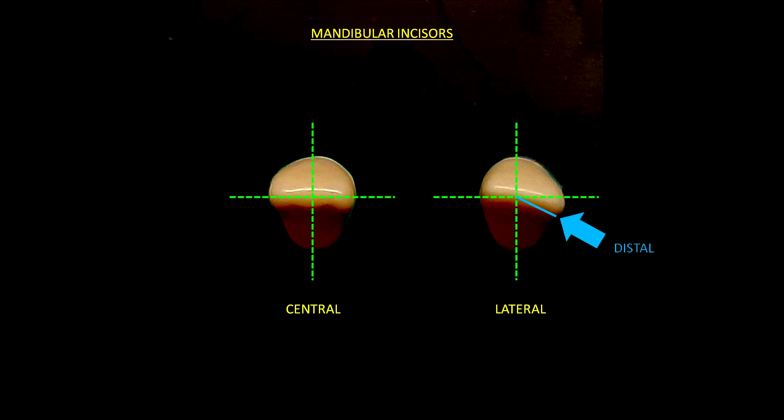In summary, if we want to identify the lateral from the central mandibular incisor, we have to look at the incisal border. If the incisal border is twisted and deviates towards the distal region, then it is a lateral incisor. If we have bilateral symmetry, then it means we have a central mandibular incisor. This is a good tip because the incisal border also helps us distinguish the right from the left mandibular incisor.